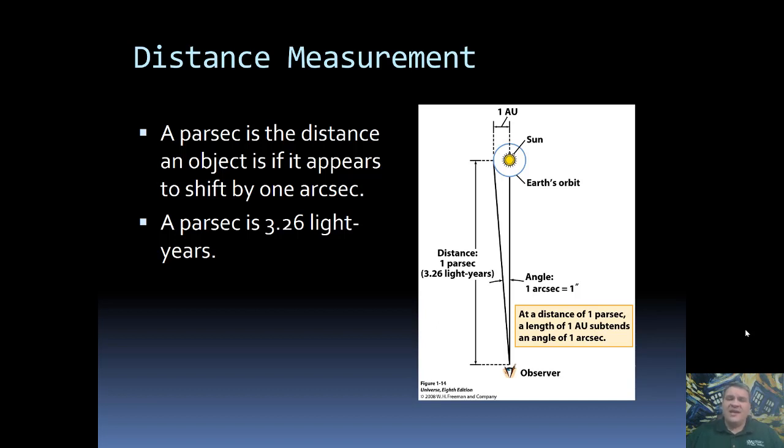With all of this information, we can now define a parsec. A parsec is the distance an object is if it appears to shift by one arc second as the Earth goes around the Sun.